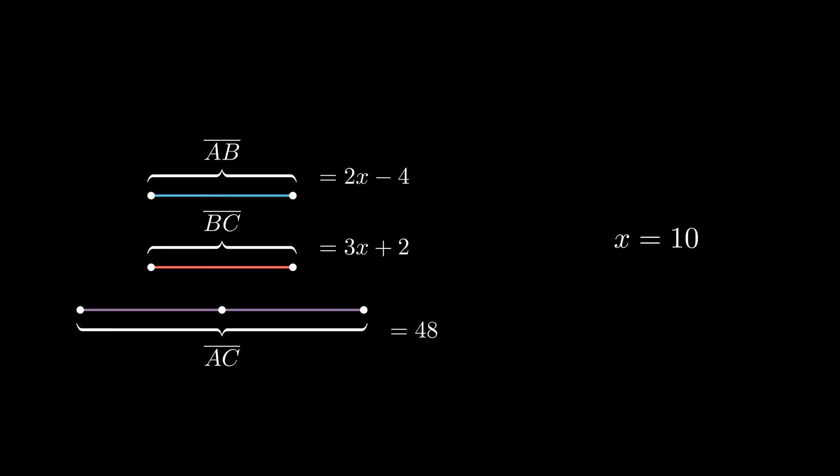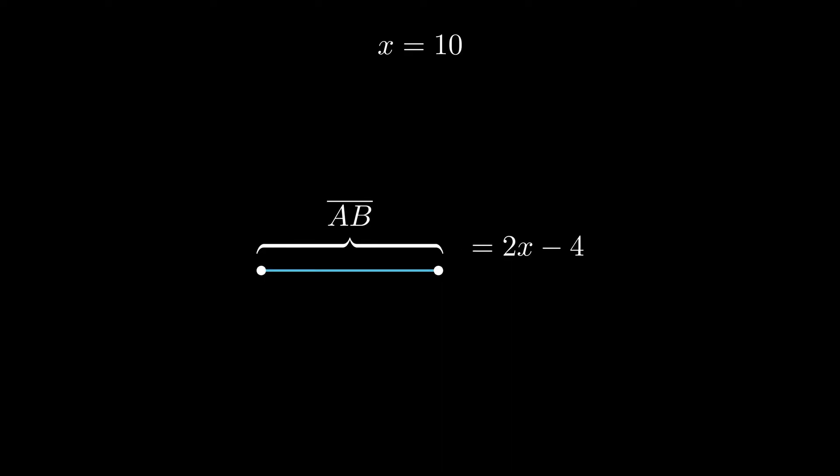Now that we've found x, we have to find the value of line segments AB and BC. How would we answer that? Well, we have already established that x equals 10. So the simple solution is to just plug in 10 for x in the given expressions. So for line segment AB, we can rewrite the expression as the equation AB equals 2x minus 4.